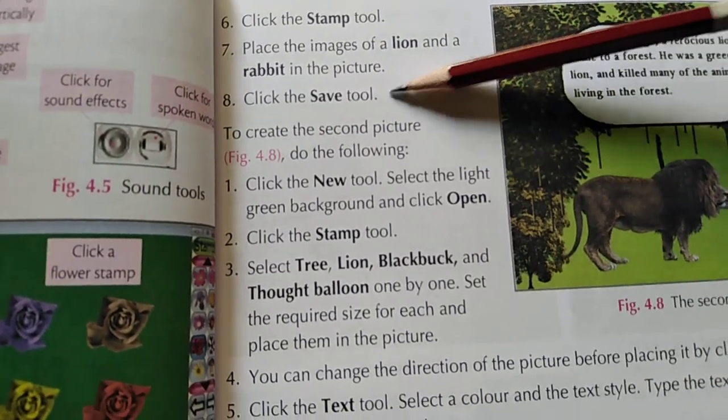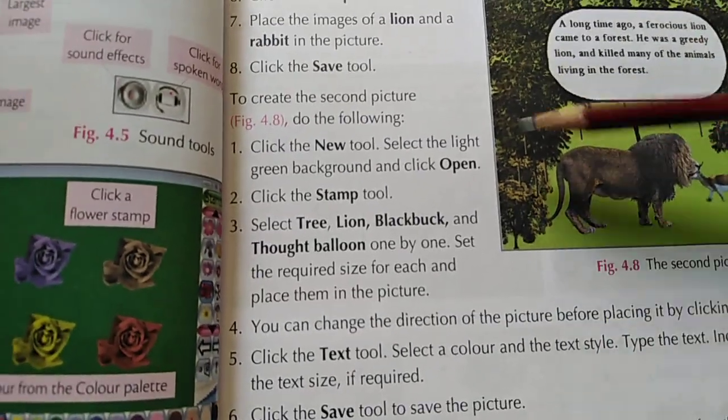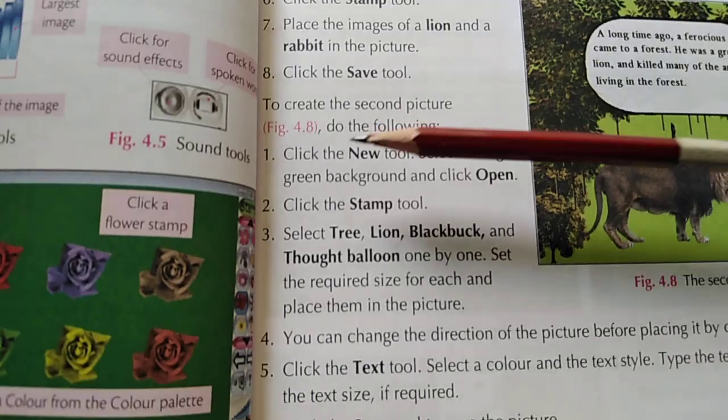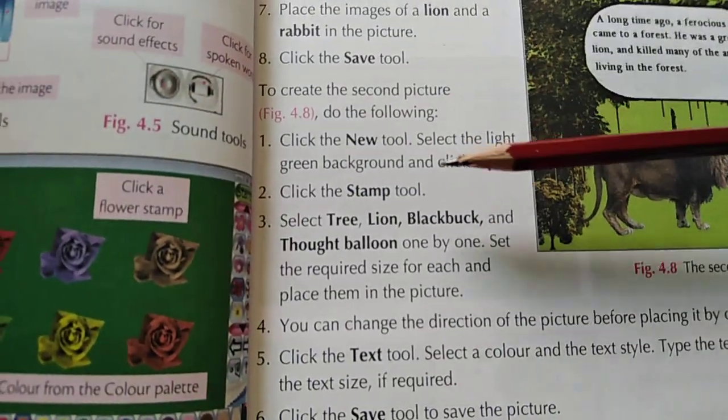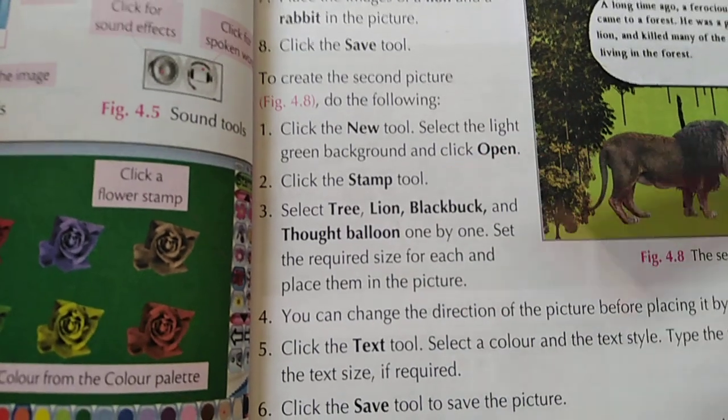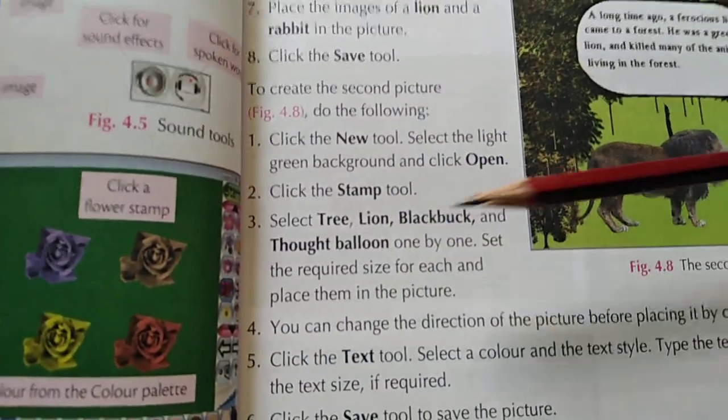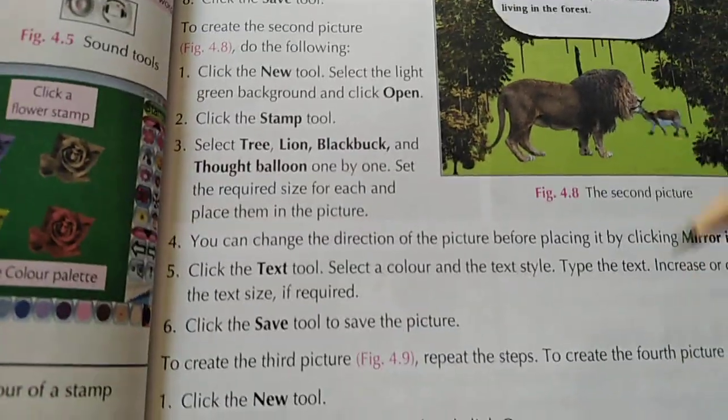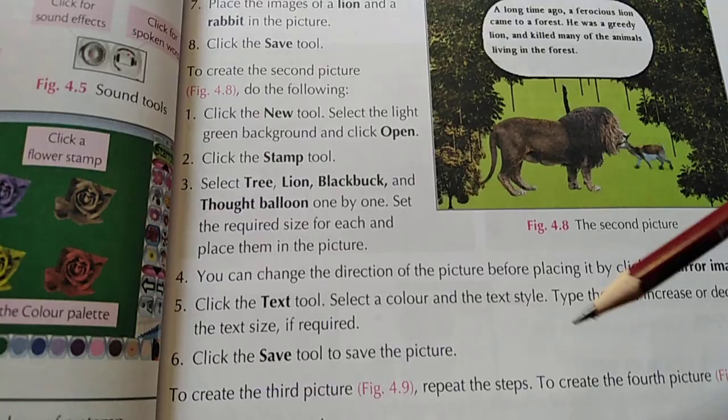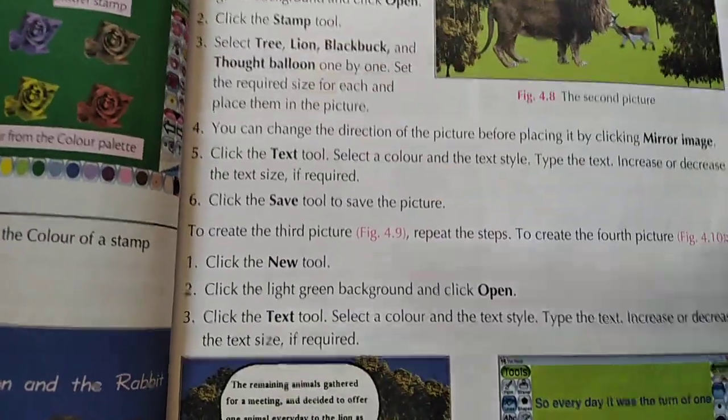Click on the Save tool to ensure one picture has been created. If you want to create the second picture, repeat the same steps: click on the New tool, select the background, then click on the Stamp tool, add some stamps in the pictures, change the size, place some text in it, and then save. For the third picture, repeat the same steps.